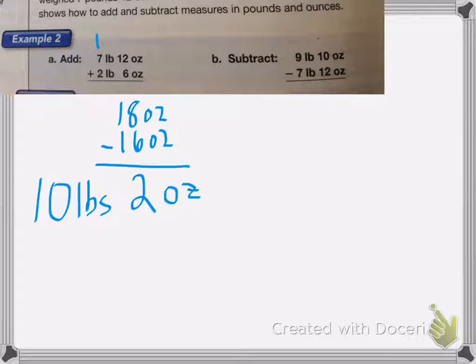Now with subtraction, I need to worry about the 16 ounces if I'm subtracting it or I have to borrow. So I cannot take 12 away from 10. So what I need to do is I need to borrow from the 9. The 9 becomes an 8. Now I'm not just going to add a 1 here. I need to add 16 ounces to the ounces I currently have. I'm going to rewrite the problem.